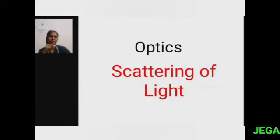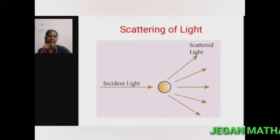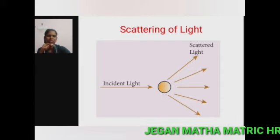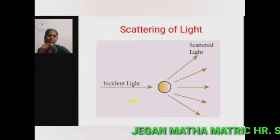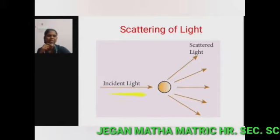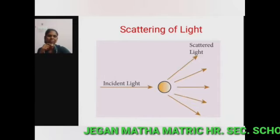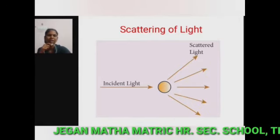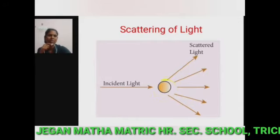Welcome students. This is the continuation of the optics chapter. In this class we are going to learn about scattering of light. When sunlight enters the earth's atmosphere, the atoms and molecules of different gases present in the atmosphere refract the light ray in all possible directions. This phenomenon is known as scattering of light. The interacting particle — the atoms and molecules — is called a scatterer.